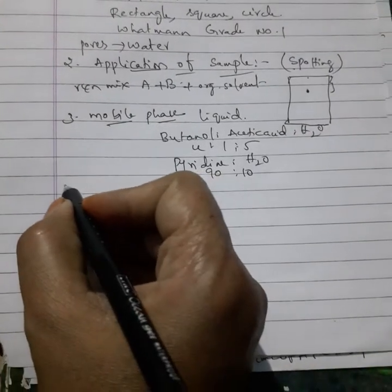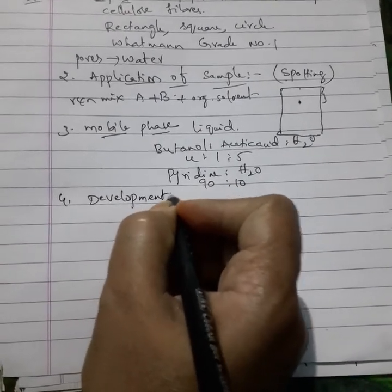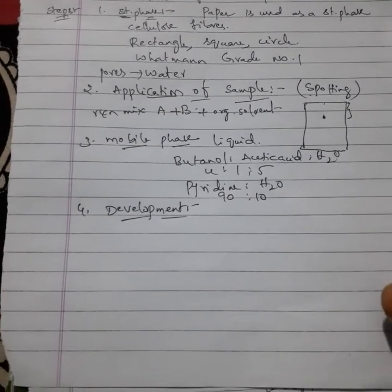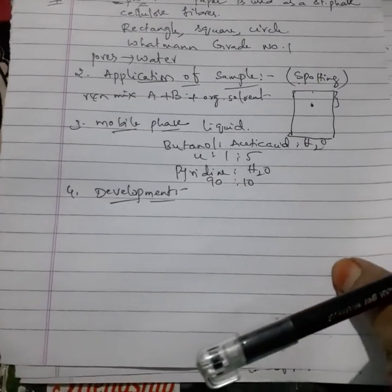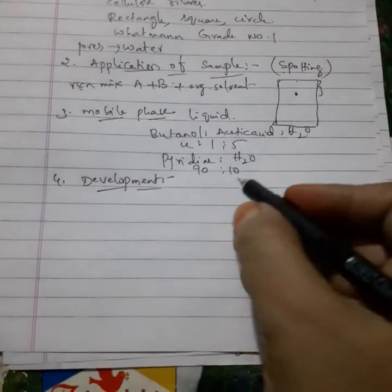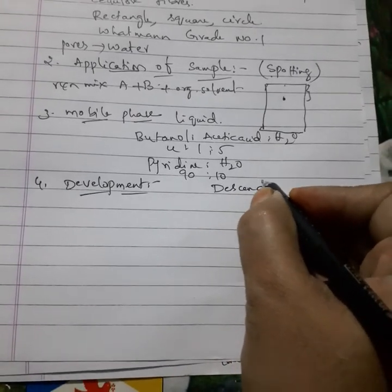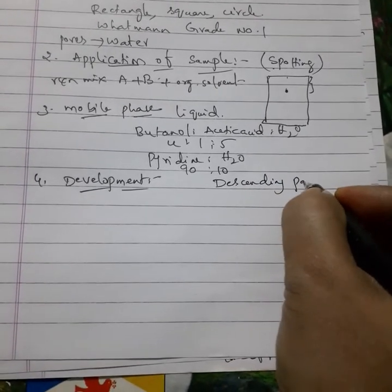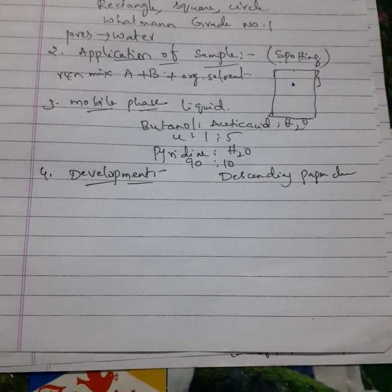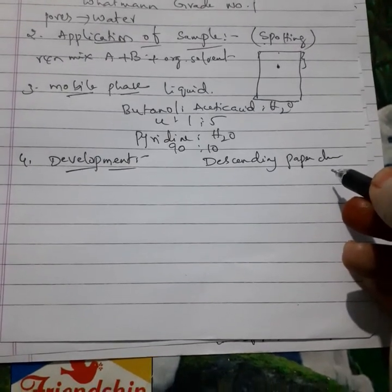The fourth step is development. Before entering into development, paper chromatography is mainly divided into two categories: one is descending paper chromatography, and the second one is ascending paper chromatography. First we will see what is meant by descending paper chromatography.